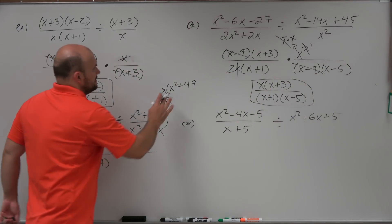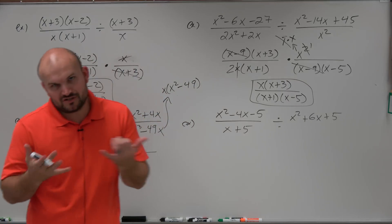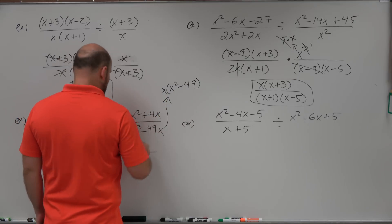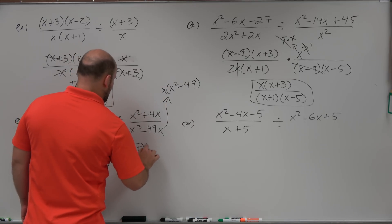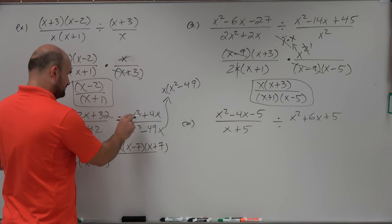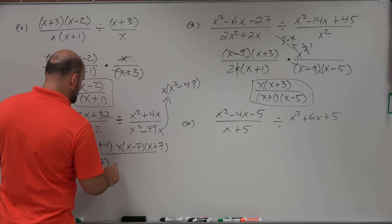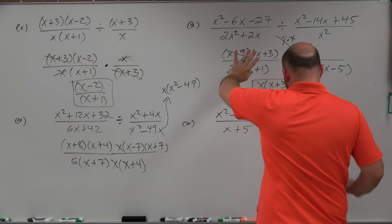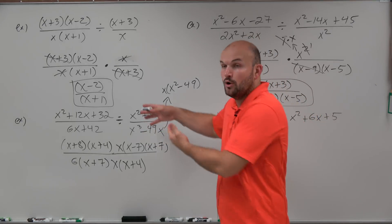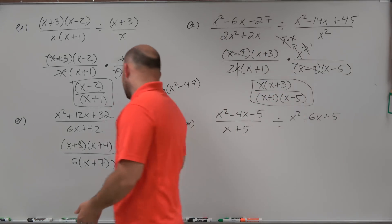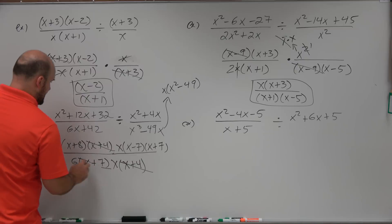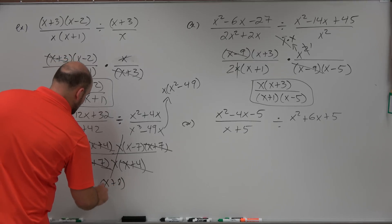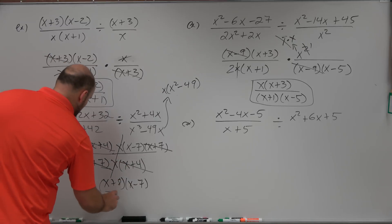That's x²-49 — I realized it should be a minus, not a plus, because there is no sum of two squares, only a difference of two squares. So x²-49 factors as (x-7)(x+7). The new denominator has another x factored out, leaving (x+4). Now simplifying: the (x+4)'s cancel, the (x+7)'s cancel, and the x's cancel. We're left with (x+8)(x-7) all divided by 6.